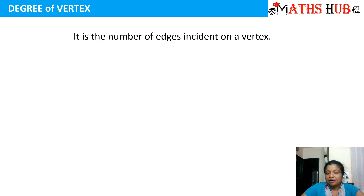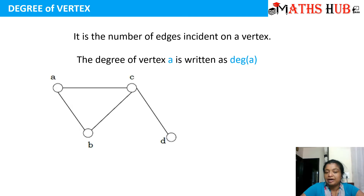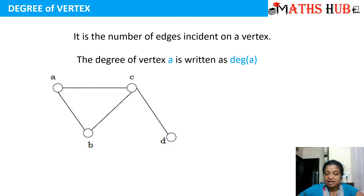What do we mean by degree? It is the number of edges that is incident on a vertex. The degree of any vertex A is written as deg and we enclose the vertex in parenthesis. For example, if we have a graph with vertices A, B, C and D, to calculate the degree of vertex A we count how many edges are incident on this vertex. Two edges are getting incident on this vertex.